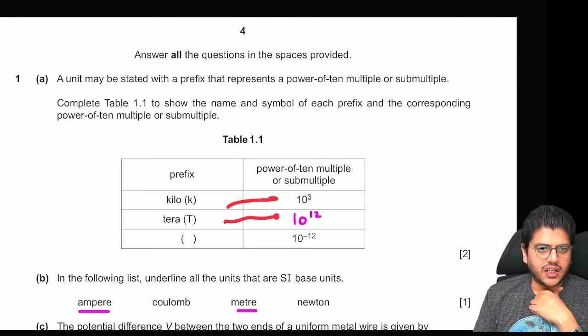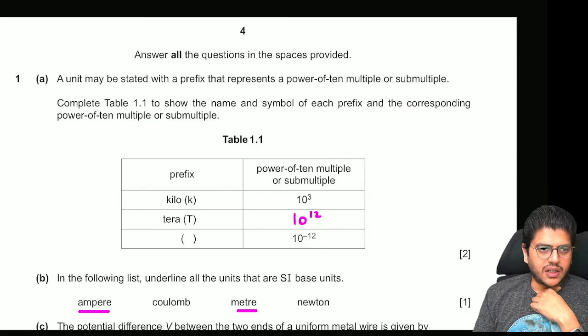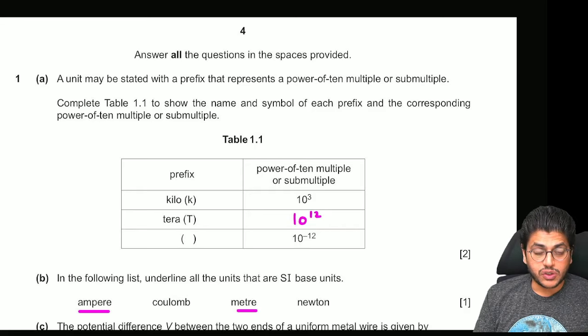So kilo is 10 raised to power 3, tera as you know is 10 raised to power 12. Now underline the units that are SI base units.